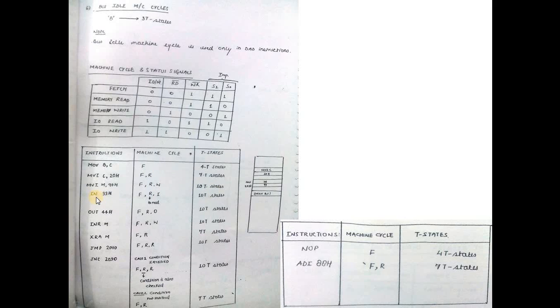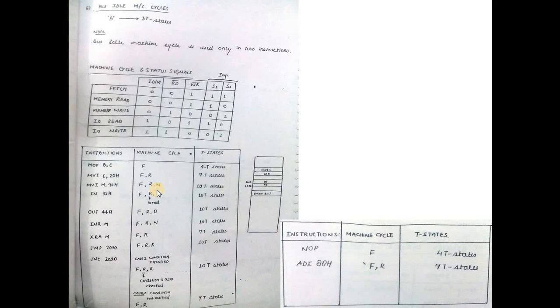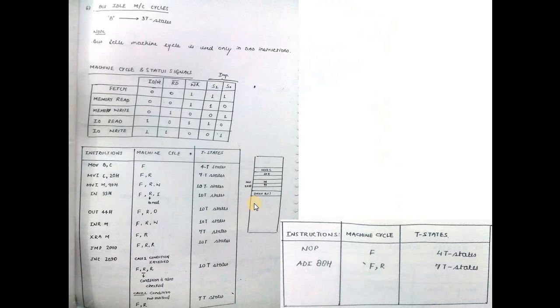IN instruction reads from input port: fetch (4), memory read (3), and I/O read (3), totaling 10 T-States. OUT instruction: fetch (4), memory read (3), I/O write (3), totaling 10 T-States. Similarly, you can calculate for all other instructions. This is the most important exam question: how many T-States would an instruction require?